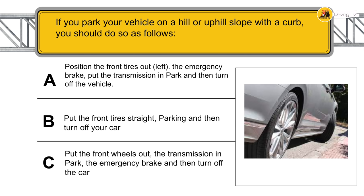If you park your vehicle on an uphill slope with a curb, you should do as follows: position the front tires out to the left, apply the emergency brake, put the transmission in P park, and then turn off the vehicle.